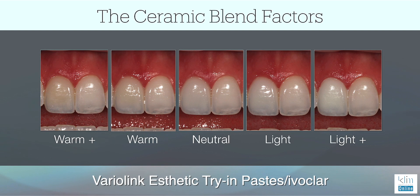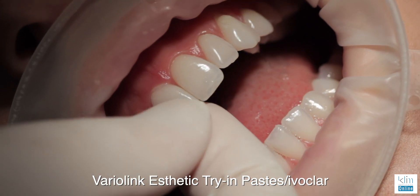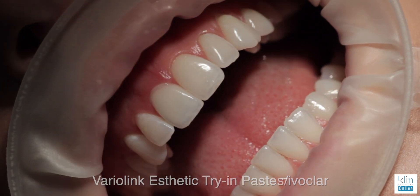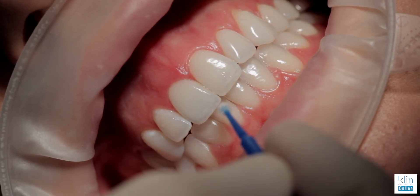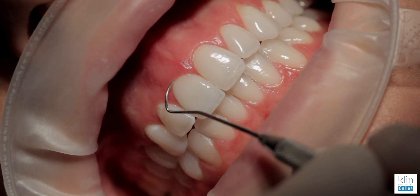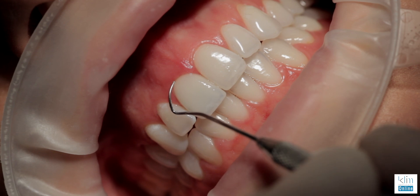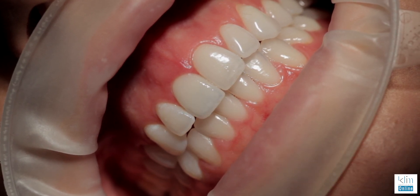From our try-in paste, I felt neutral was spot on. What I've learned with the try-in paste is to choose one shade brighter than what you want, because the value will eventually tone down a bit after cementation. With light try-in paste, you can see it's just a tad brighter than the adjacent central with color-corrected light — but that's exactly what I want. The value will come down once cemented, ceramics are hydrated, and the composite matures, and then we'll get a really good blend.